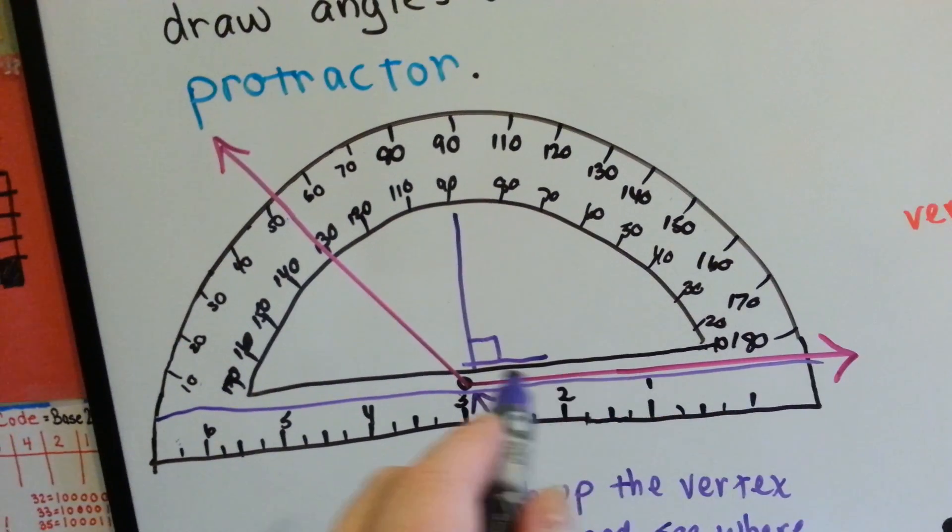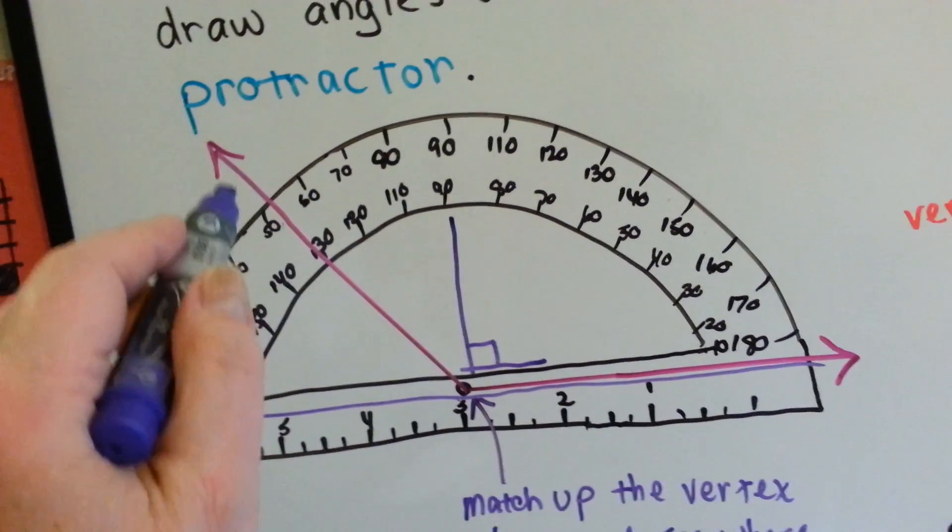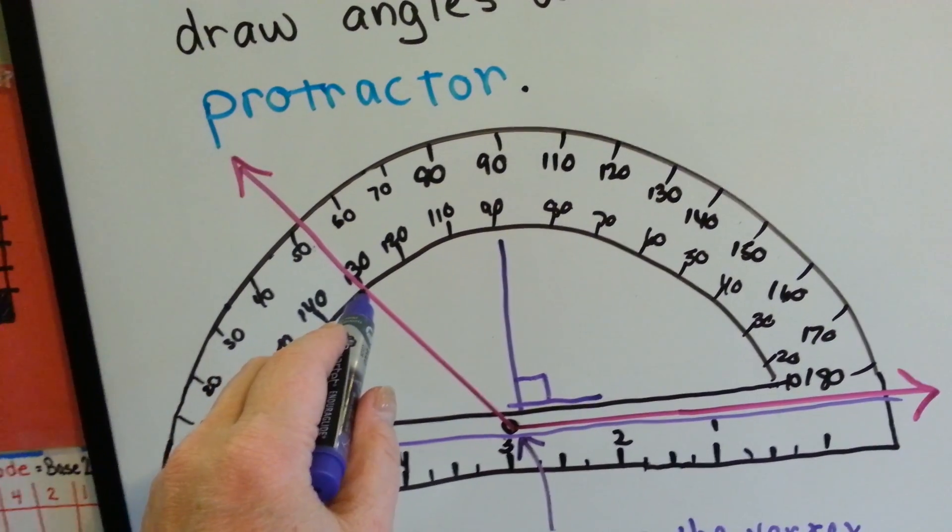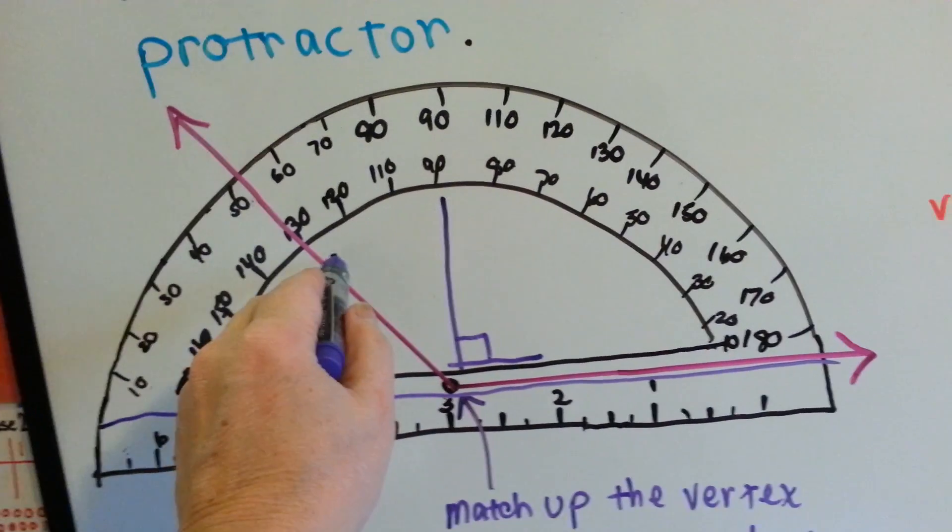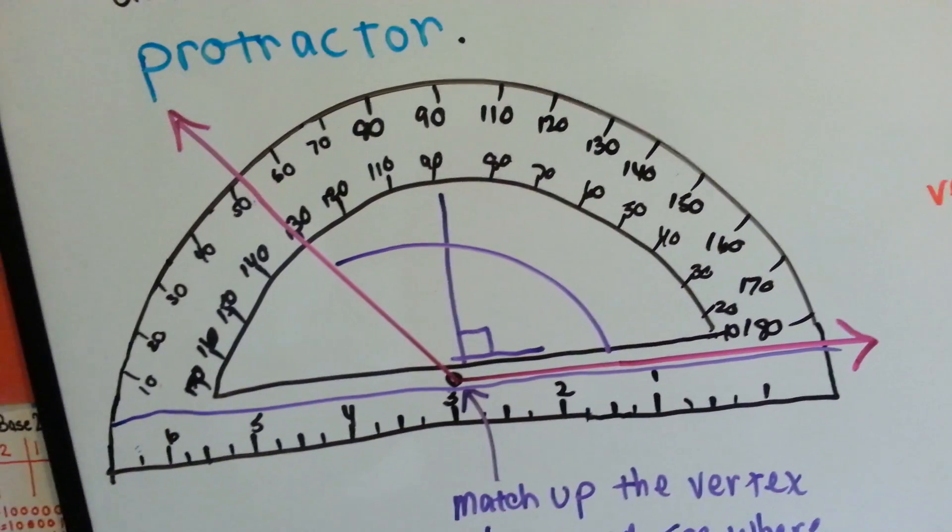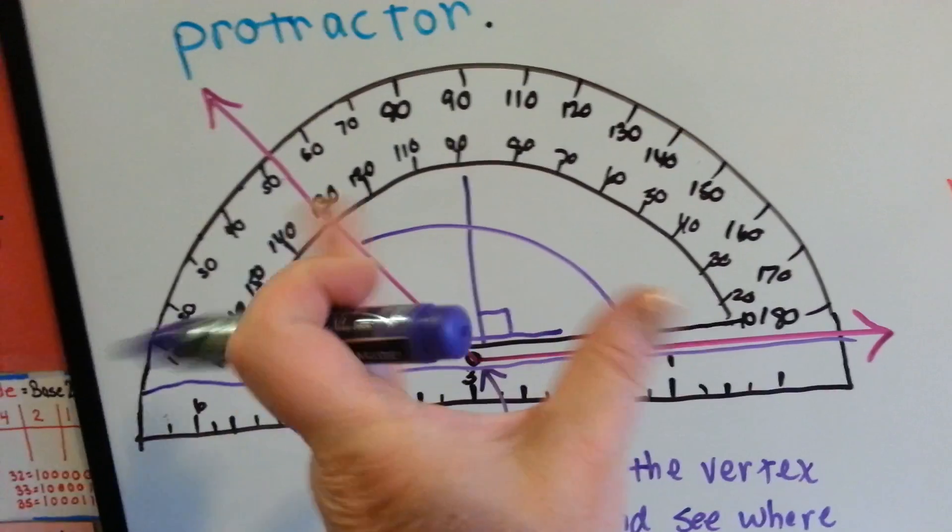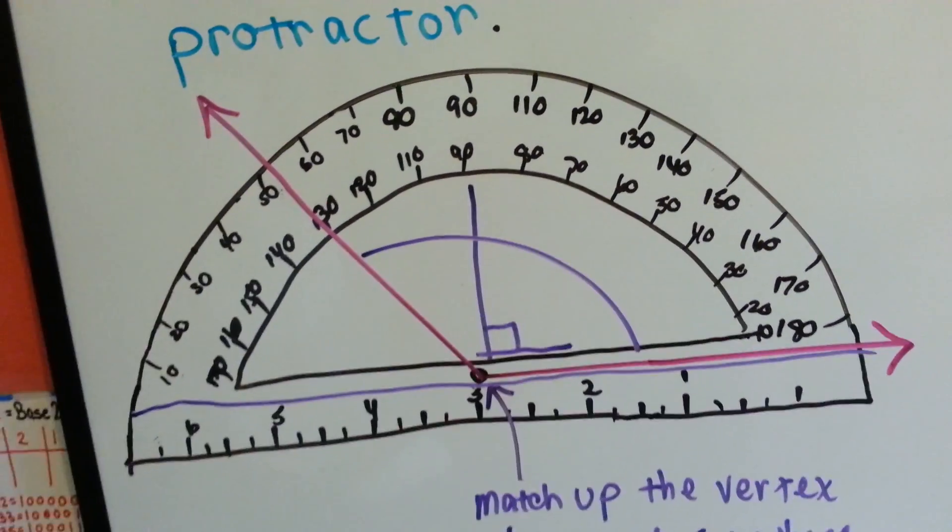So because this angle is an obtuse one, we're going to go with the 130 and not 50. We know this isn't a 50 degree angle. This is open too much to be a 50 degree angle. It's bigger than 90, so it's got to be the 130.